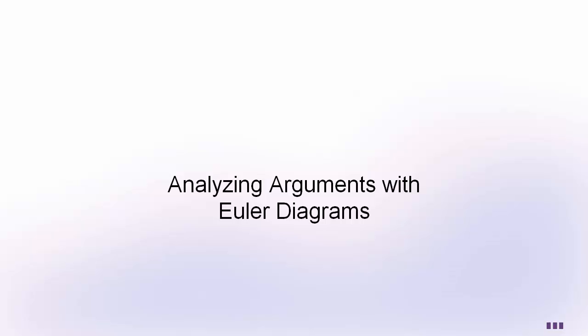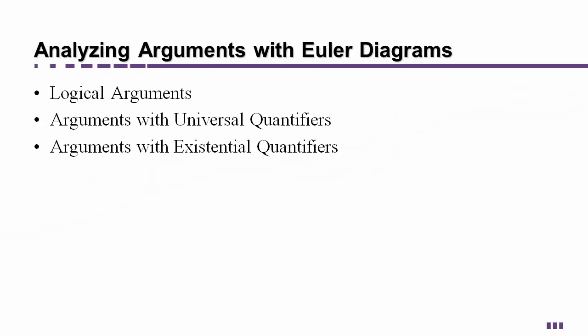Welcome to our discussion on Euler diagrams. We are going to look at how to analyze logical arguments and what makes an argument logical or not. We are going to look at universal quantifiers and existential quantifiers and how to use Euler diagrams to figure out when they are true and when they are not.